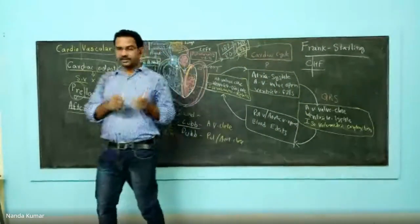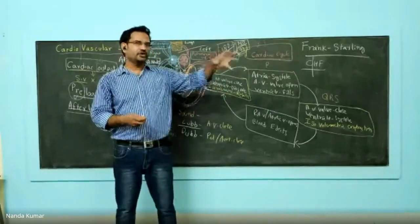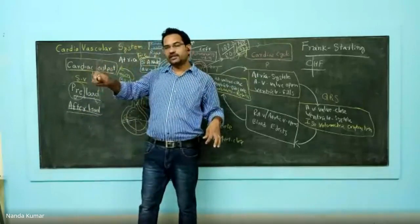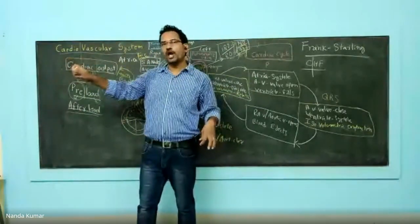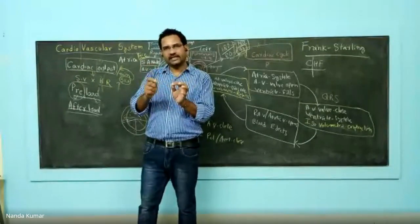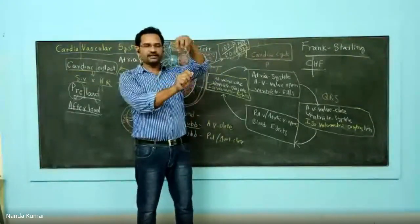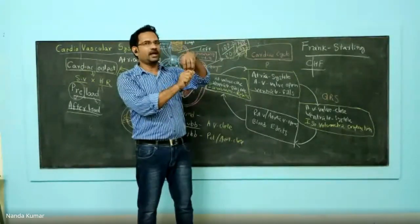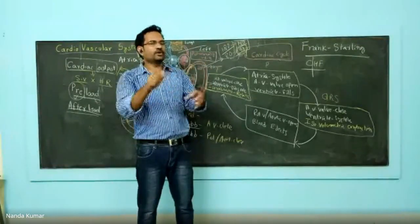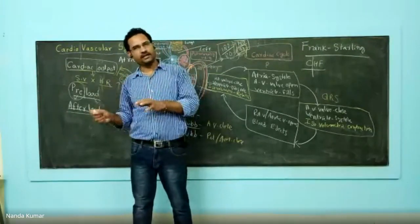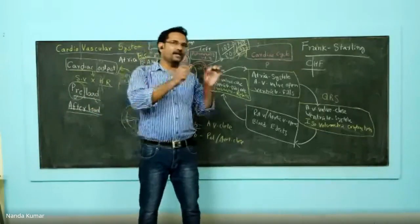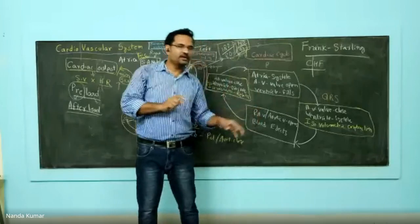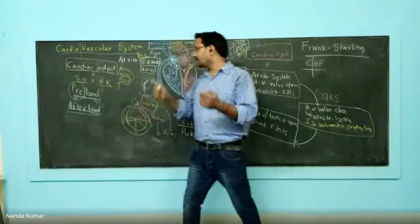Adrenaline. Understand the difference: noradrenaline is a neurotransmitter released from the adrenergic system. Adrenaline is a hormone released from the adrenal medulla. 'Adrenal' means kidney — 'ad' means on the upper part. At the top part of the kidney, there is a gland called the adrenal gland. From that adrenal gland, a hormone comes out known as adrenaline. Adrenaline is a hormone; noradrenaline is a neurotransmitter. Both of them show actions on the heart.